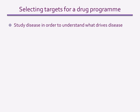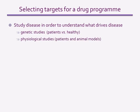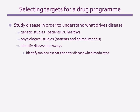Once the disease has been selected, the next step is to research the disease. Nowadays, this usually begins with a genetic study to identify changes in gene sequence or gene expression in healthy versus diseased tissues. It has always involved physiological studies of patients and animal models of the disease where available. When the involvement of particular genes has been identified, it is now possible to engineer mice with the genetic defect to provide an animal model. These studies help to identify specific disease pathways, from which scientists can predict molecules that might be able to alter the disease process when modulated by drugs.